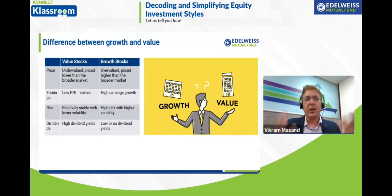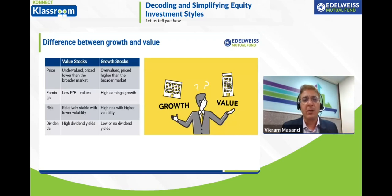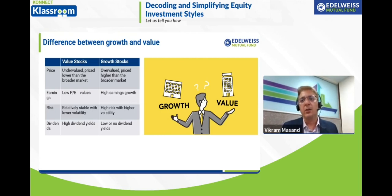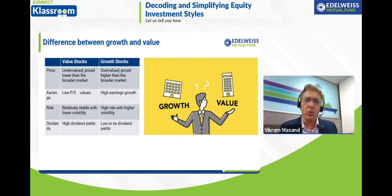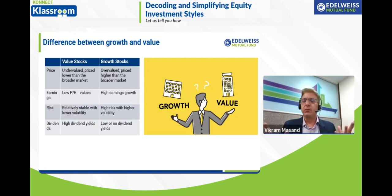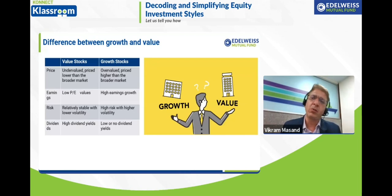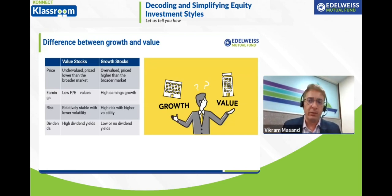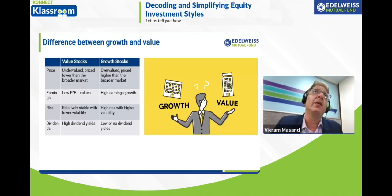In a nutshell, differentiating value and growth: value stocks are underpriced or undervalued, with prices lower than broader markets, while growth stocks are often considered overvalued. Value stocks have a lower price-to-earnings ratio; growth stocks show higher earnings growth and a higher P/E. In terms of risk, value stocks tend to be less volatile since they're not attracting much attention. Growth stocks can have higher volatility. On dividends, growth stocks usually have very low dividend yield, while value stocks could have a higher dividend yield.